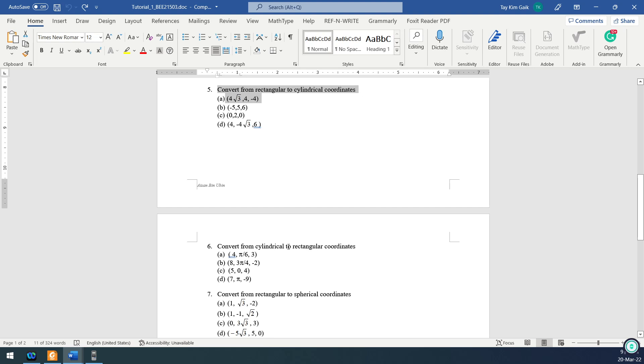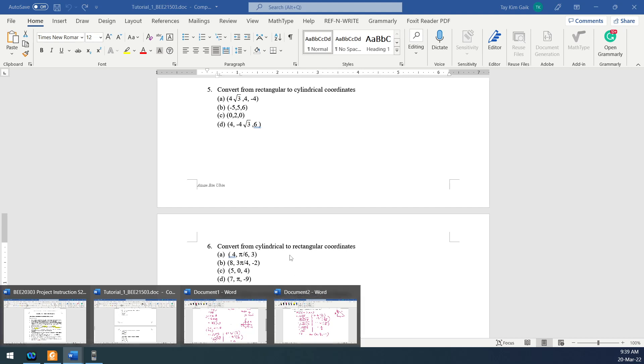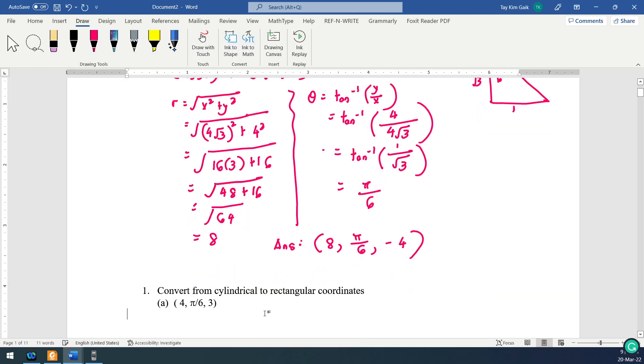If not, we look at the cylindrical to rectangular. So it's question 6a. The rest, you do yourself. Then if any question, we discuss it this Tuesday.